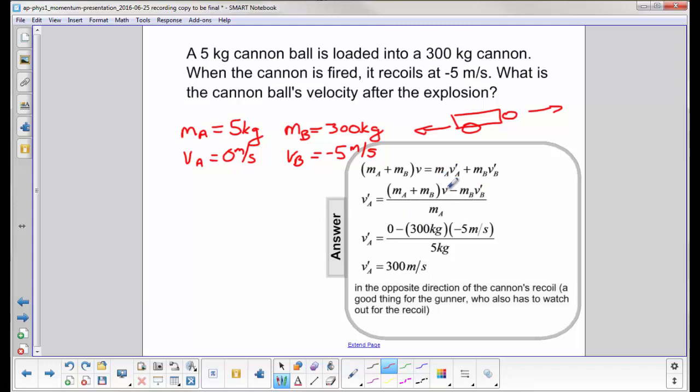The first thing we notice is the initial velocity is zero, so this whole term cancels out. We have zero. Then you have minus a 300 kilogram cannon with a negative velocity, divided by the mass of the cannonball. The final velocity of the cannonball is 300 meters per second positive,